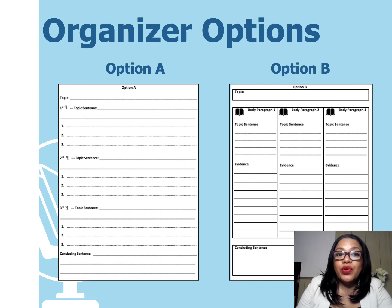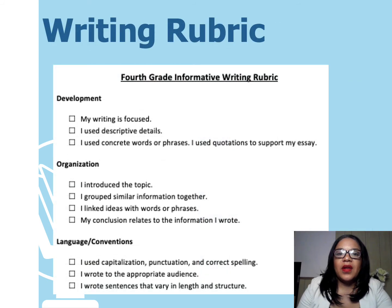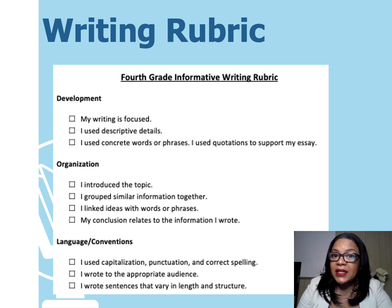Make sure you include evidence from the text to support your response. Just like last time, you will use one of these organizers to plan your writing. You can choose option A or B — you only have to do one. Be sure to use one of these organizers to plan out each part of your writing. Here is the student-friendly checklist that shows all the features you should include in your writing.